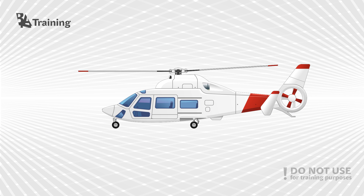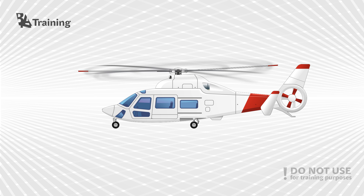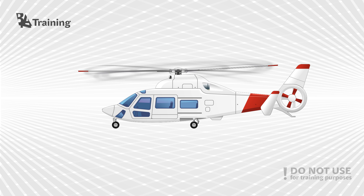Ducted fan: ducted fans have between 8 and 18 blades arranged with irregular spacing so that the noise is distributed over different frequencies. The housing is integral with the aircraft skin and allows the high rotational speed. Therefore a ducted fan can have a smaller size than a conventional tail rotor.